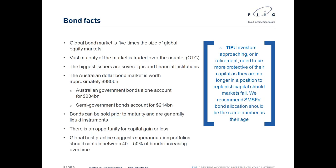The global bond market is roughly five times the size of the global equity market. Australia has been an underdeveloped market — for many years we didn't have a government debt or bond scheme because the government was in surplus. The vast majority of the market is traded over the counter, meaning you need a broker to access bonds. About 95% is over the counter and only about 5% is listed on the ASX.